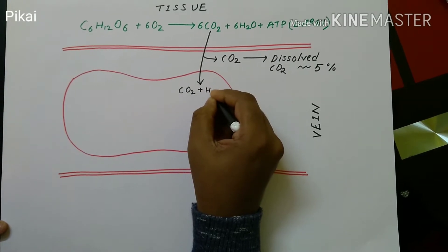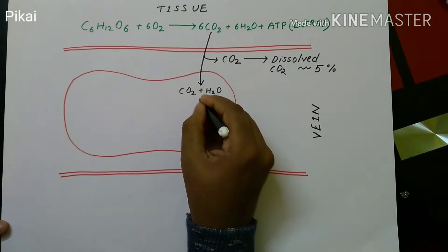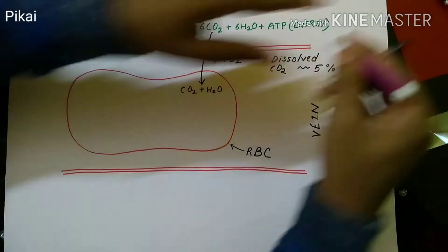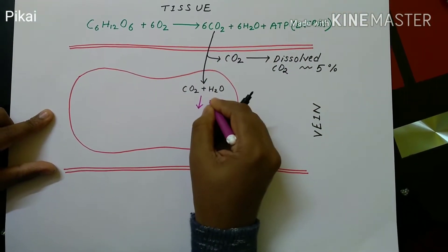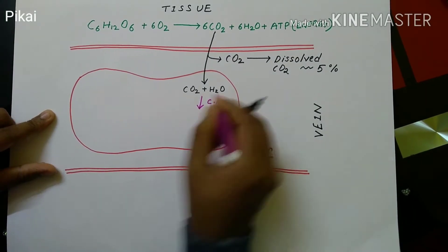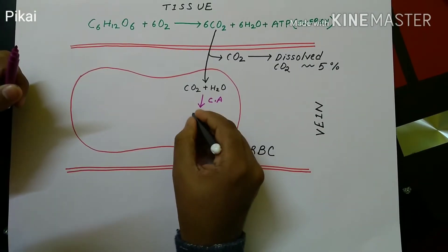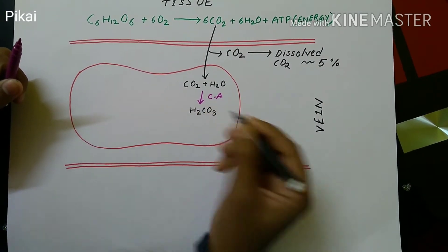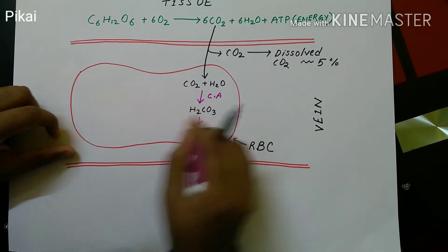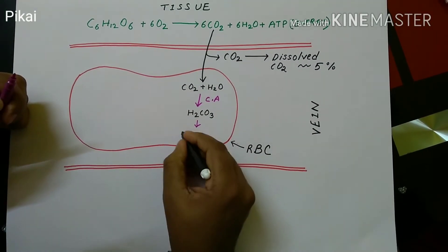forms carbaminohemoglobin. So CO2 being non-polar easily diffuses out from tissue and goes inside the red blood cell where it combines with H2O to form H2CO3, that is carbonic acid, in presence of an enzyme known as carbonic anhydrase which is found only inside the red blood cell.